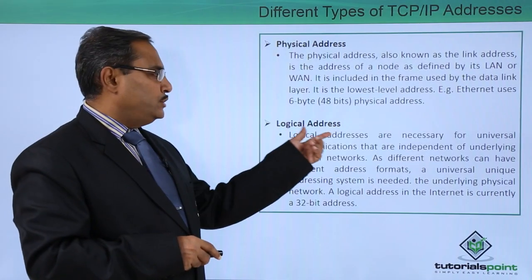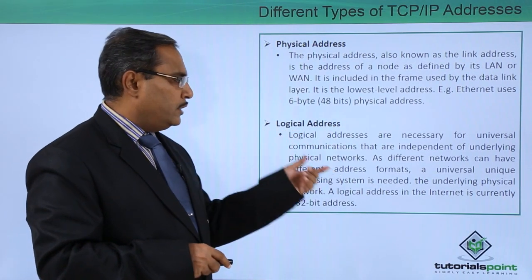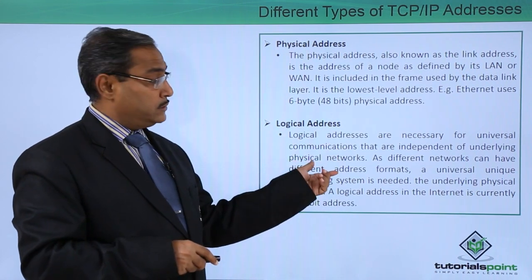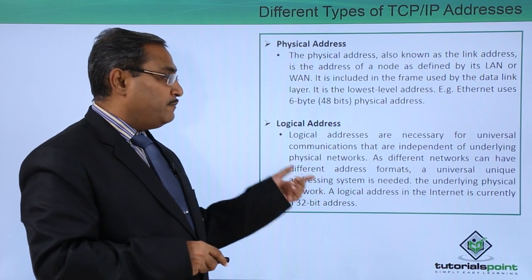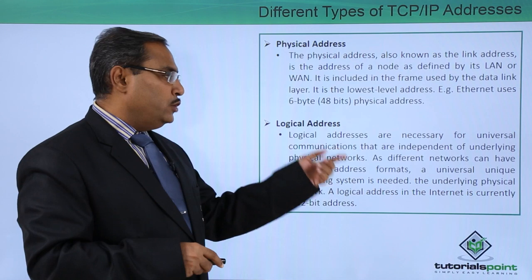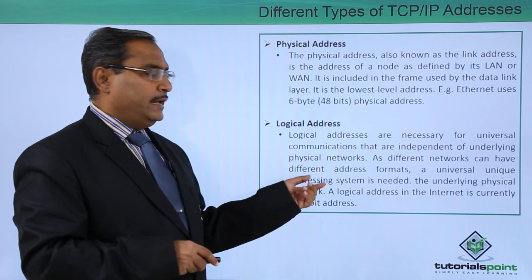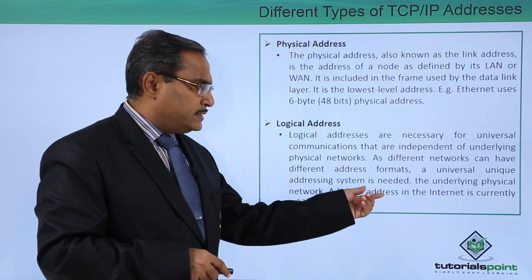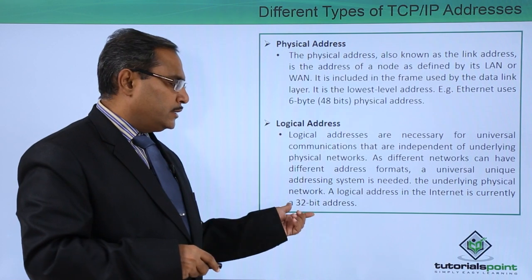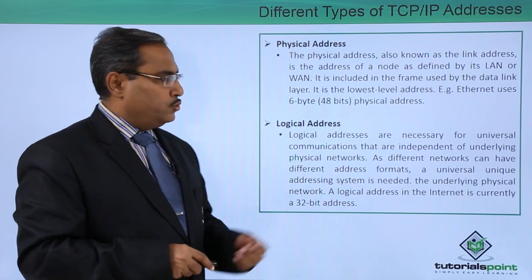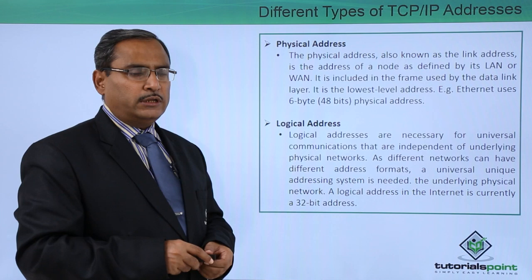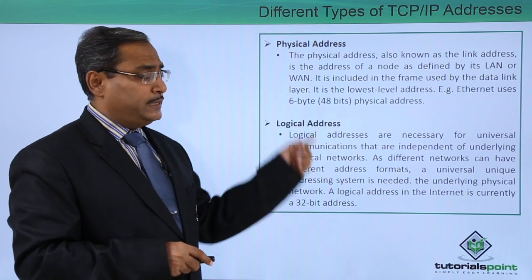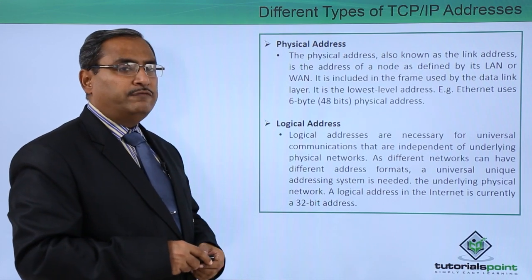Next, we go for the logical address. Logical addresses are necessary for universal communications that are independent of underlying physical networks. Since different networks can have different addressing formats, a unique, universal addressing system is required. A logical address in the network is currently a 32-bit address, compared to the physical Ethernet address which is 48 bits.